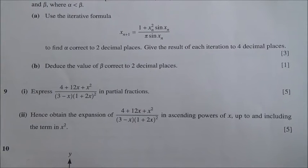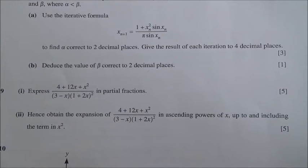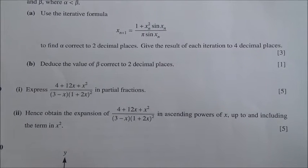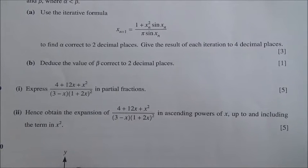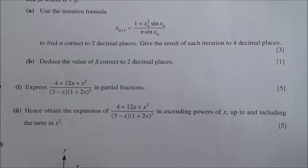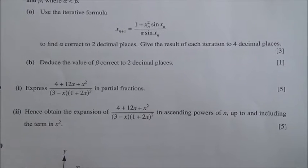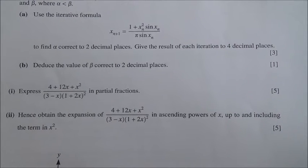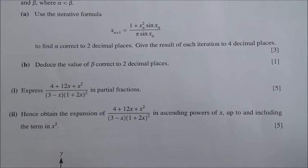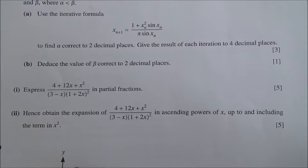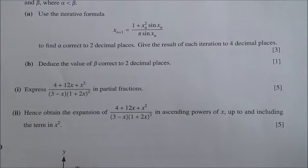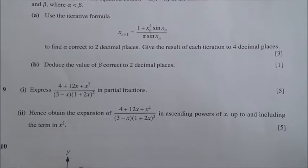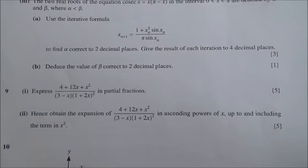Hi, this is question number 9, taken from June 2014 Advanced Level Maths HSC P3. First part: express (4 + 12x + x²) / ((3 - x)(1 + 2x)²) in partial fractions. For the second part: hence obtain the expansion of (4 + 12x + x²) / ((3 - x)(1 + 2x)²) in ascending powers of x, up to and including the term in x squared. 10 marks.